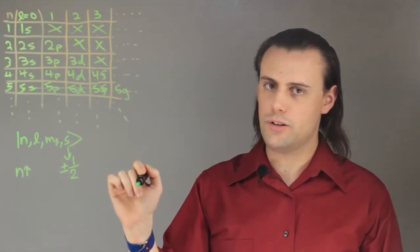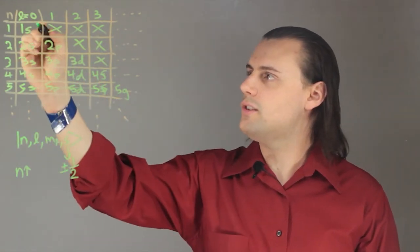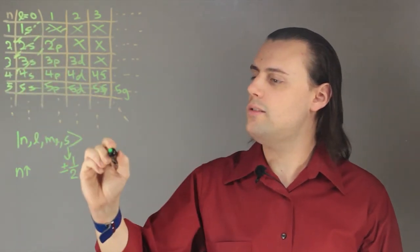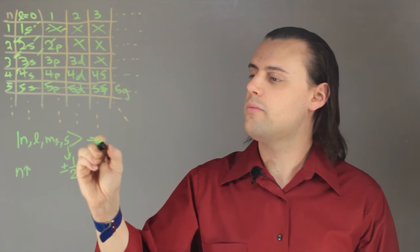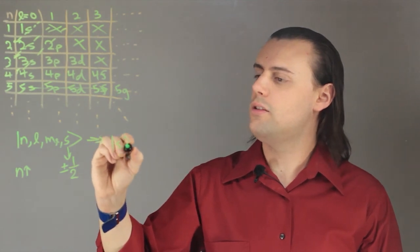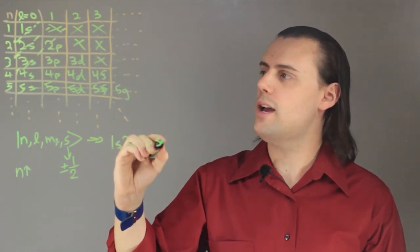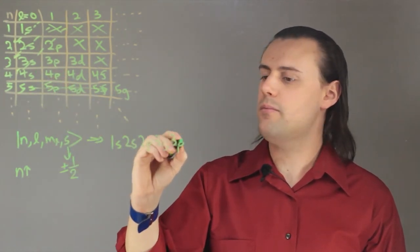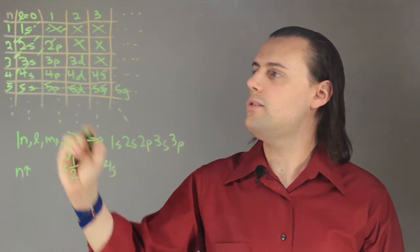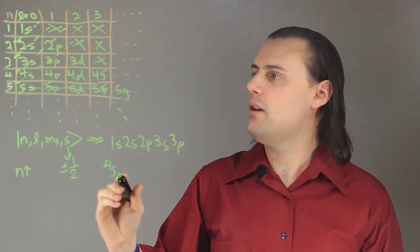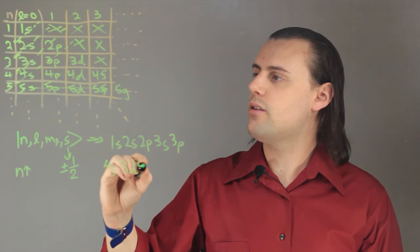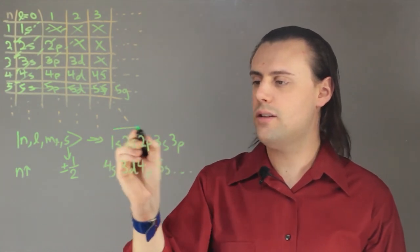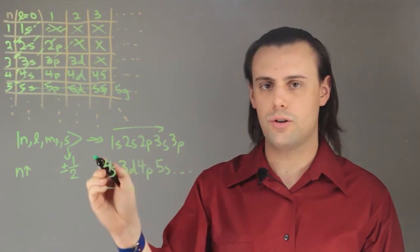So to write down the electron configuration, we just go down in this direction. Starting with 1s, we have 1s, 2s, 2p, 3s. Then we have 3p, 4s, going along in this direction. Then 3d, 4p, 5s, and so on and so forth. And this is how you would write the electron configuration.